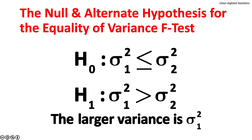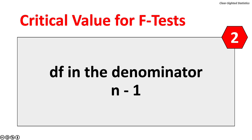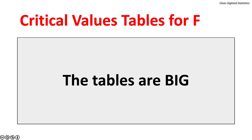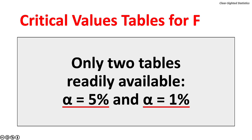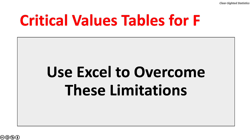F critical value tables are very large and some degree-of-freedom combinations are missing. Only 5% and 1% significance level tables are readily available, and they cannot estimate p-values. Use Microsoft Excel instead: the FINV function takes three arguments — significance level, degrees of freedom in the numerator, and degrees of freedom in the denominator. Excel can find critical values for any significance level and any combination of degrees of freedom, and provides precise p-value calculations.